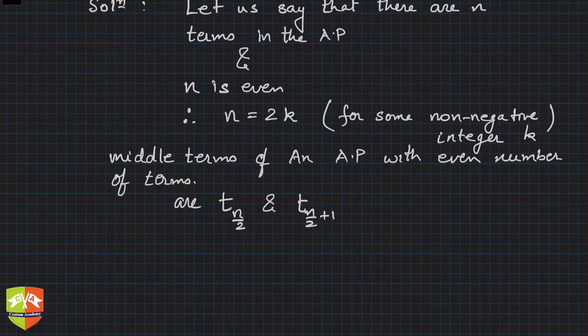We know that there are two middle terms in case of even number of terms. So in this case, what will happen? Since n is 2k, this means they are t_k and t_{k+1}. These are the two middle terms.